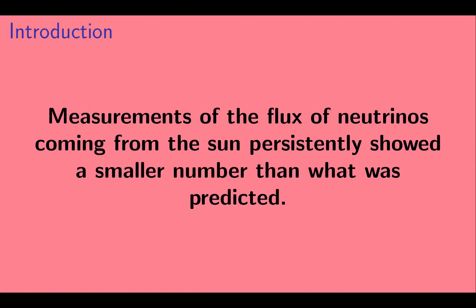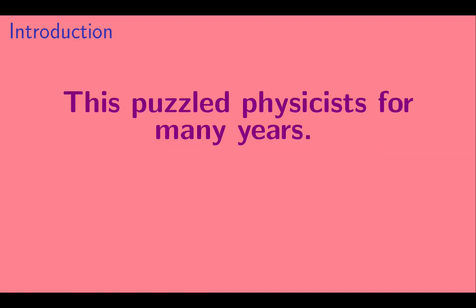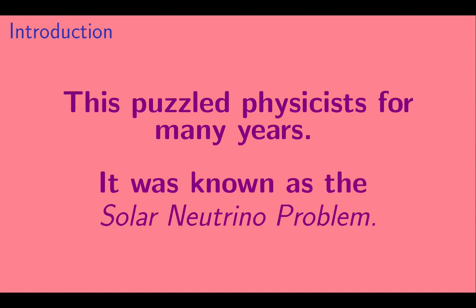Basically, measurements of the flux of neutrinos coming from the sun persistently showed a smaller number than what was predicted. This puzzled physicists for many years and became known as the solar neutrino problem.